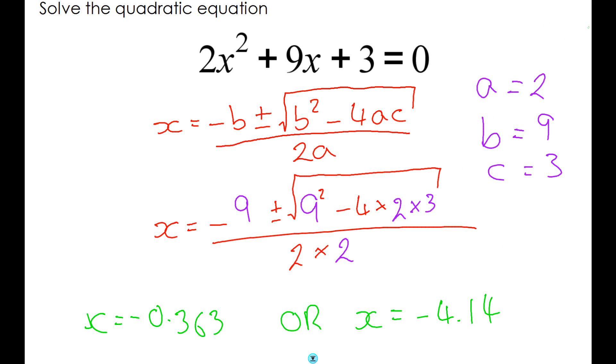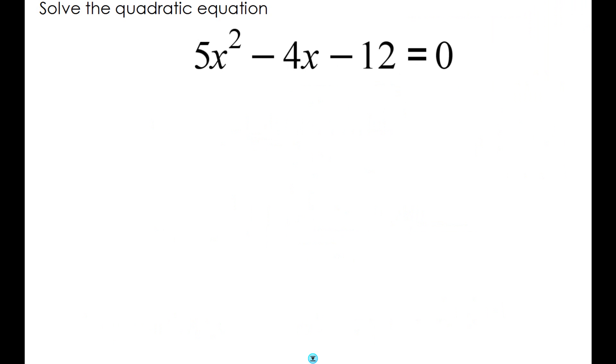That's all there is to it. Let's take a look at the second example. We go through the process in exactly the same way. So we start off by writing down that a equals 5, b equals -4.